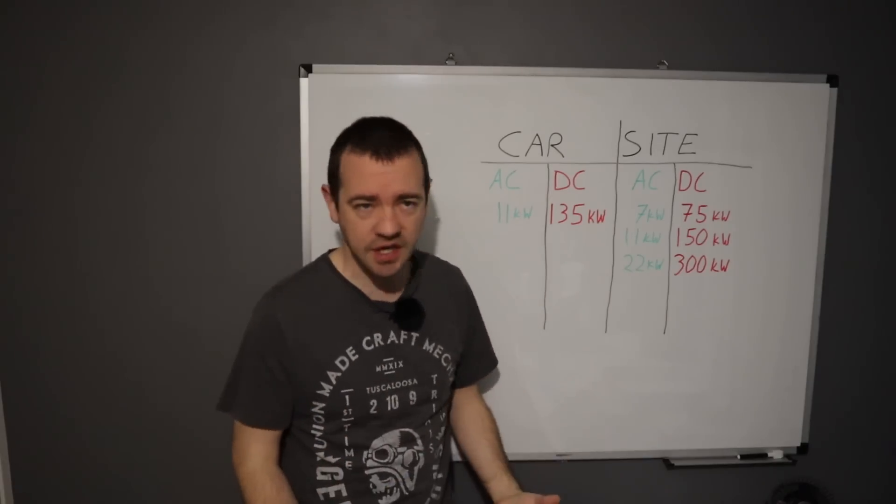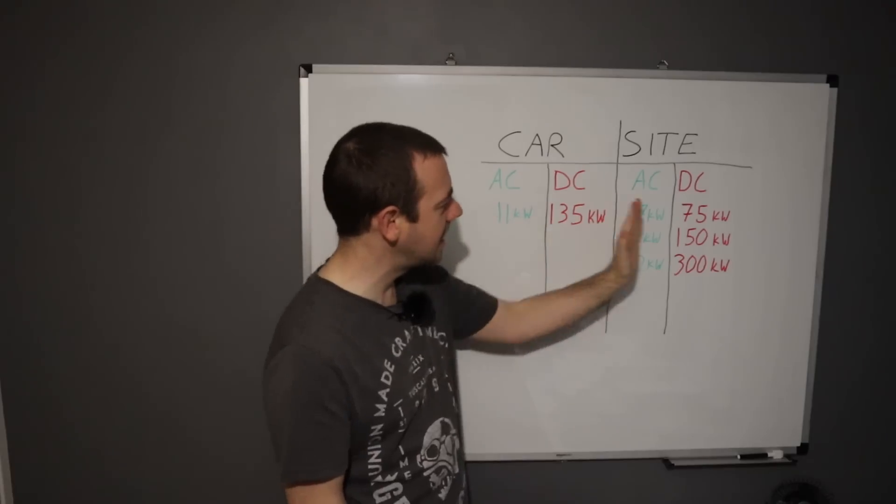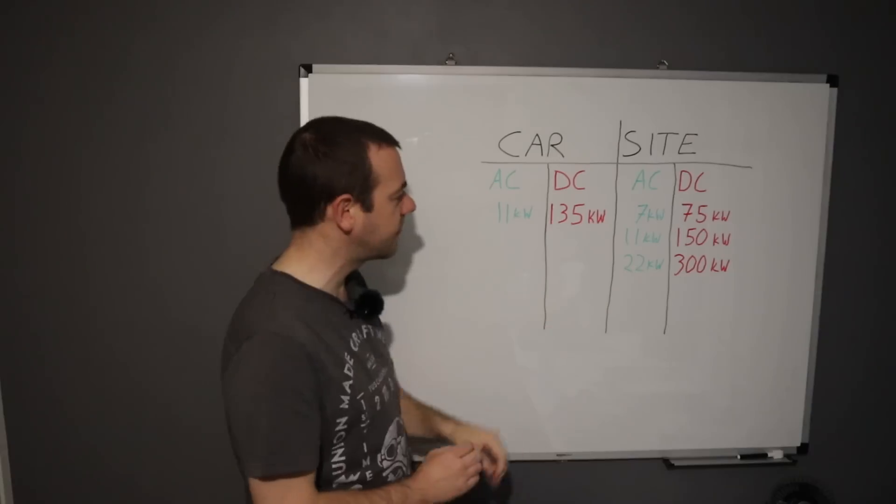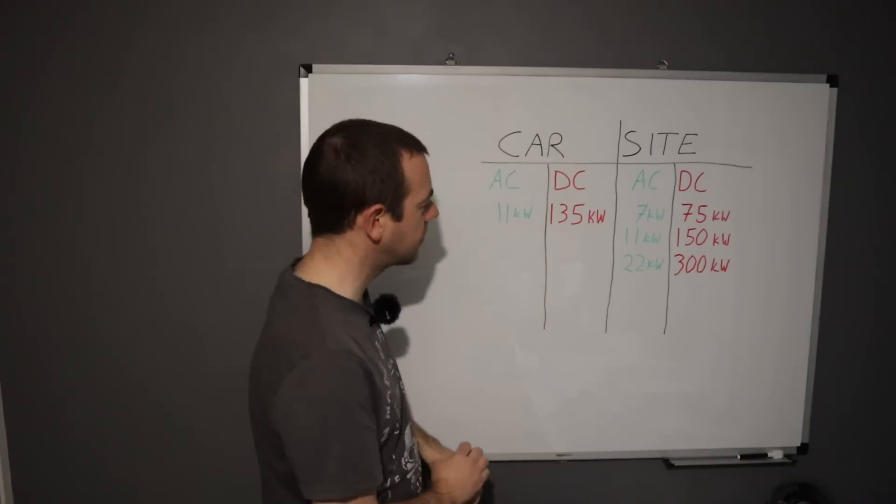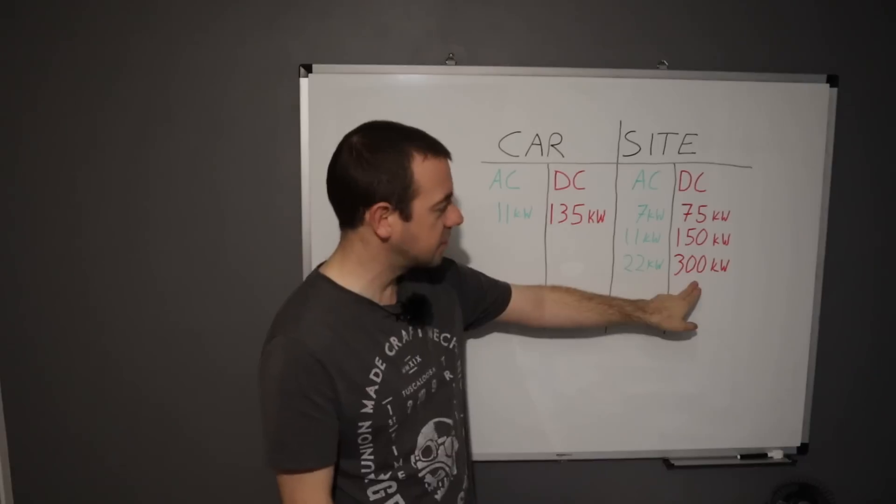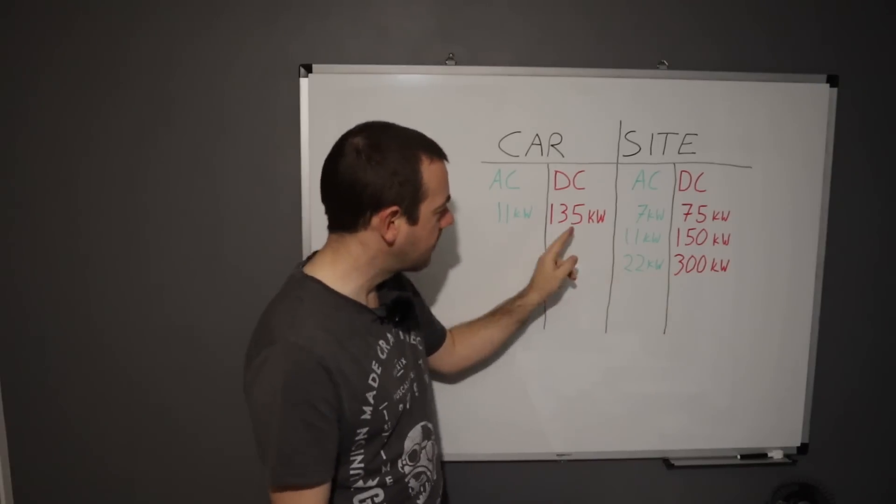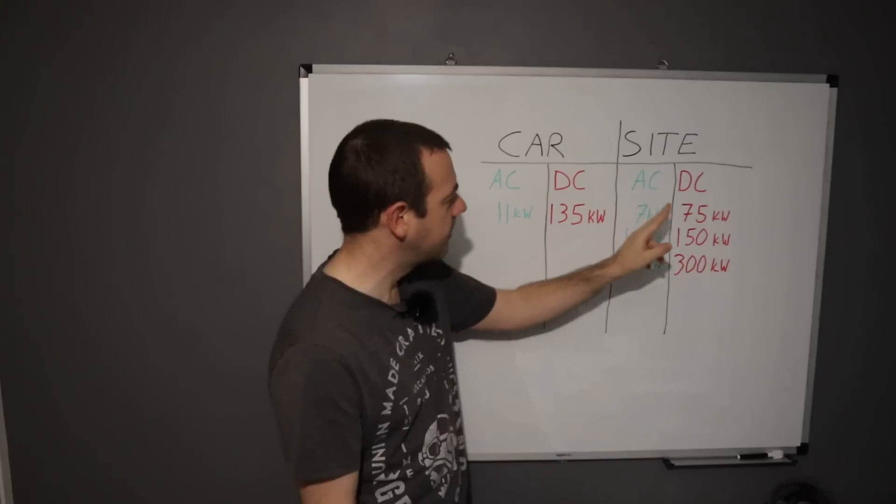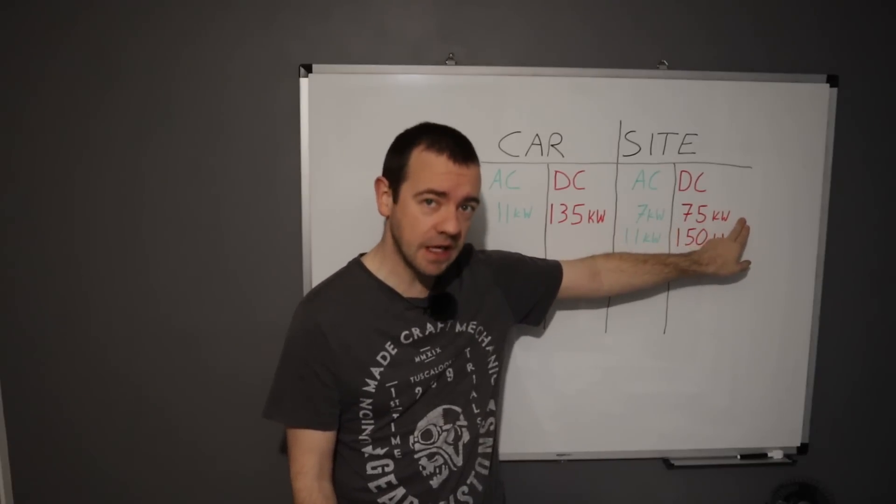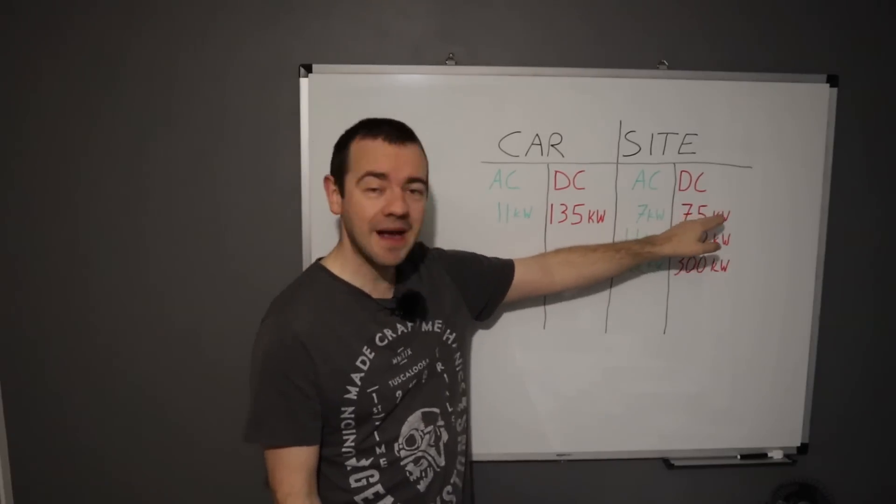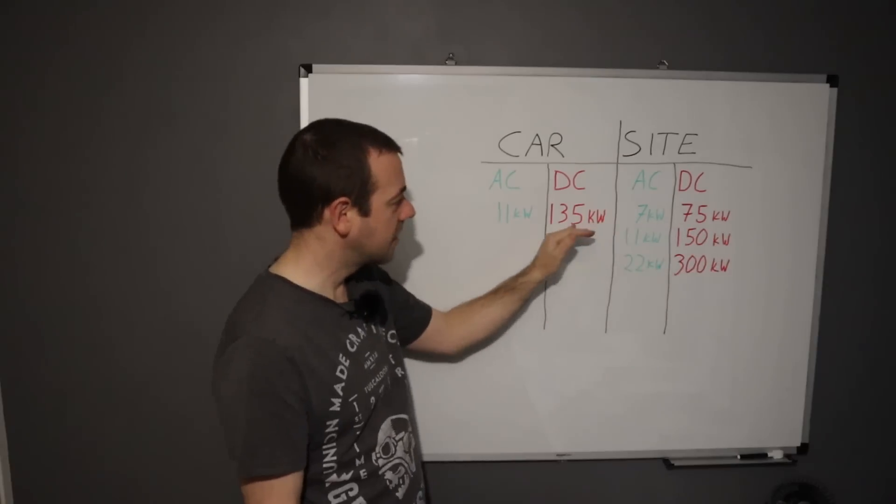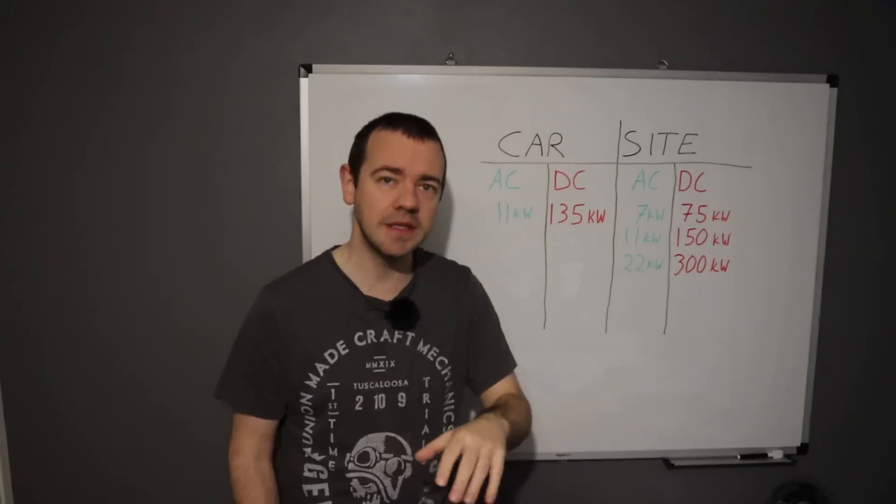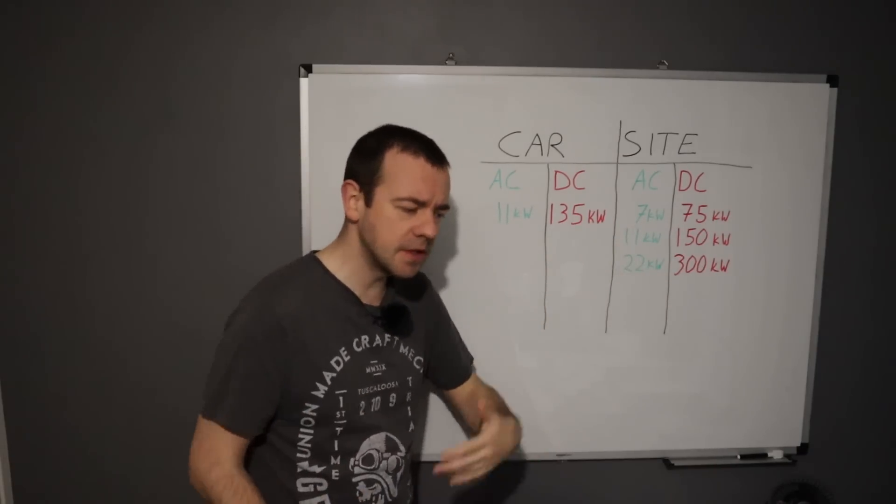The same is for DC. This car can charge 135 or up to 135. Plugging it into a 300 kilowatt charger isn't going to make it any faster because the car can only go to 135. If you plug it into the 75 kilowatt charger, you would only max out at 75 because even though the car is capable of taking more, the charger cannot give it any quicker.